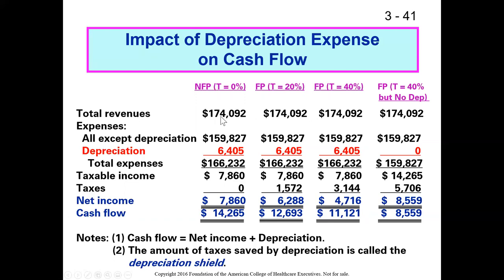Everyone has $166 million in expenses for the first three columns. Taxable income in each of those cases is $7.8 million. The not-for-profit doesn't pay any taxes, so their net income is $7.86 million. For the 40% tax bracket, 40% of $7.8 million is $3.1 million in taxes, giving net income of $4.7 million after subtracting $3.1 million.